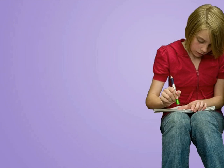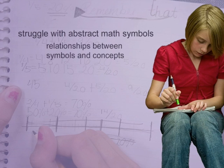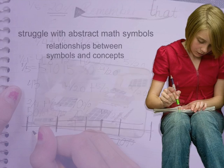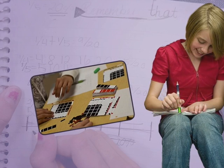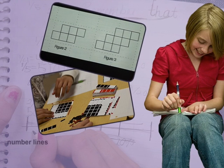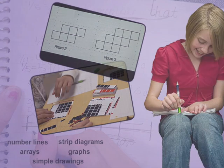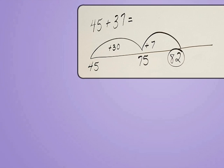Students in Tiers 2 and 3 often struggle with the meaning of abstract mathematics symbols and the relationships between symbols and concepts. These students can benefit by learning to create their own visual representations as part of problem-solving, while teachers can use concrete materials and visual representations such as number lines, arrays, strip diagrams, graphs, and simple drawings to make mathematics concepts and relationships explicit.